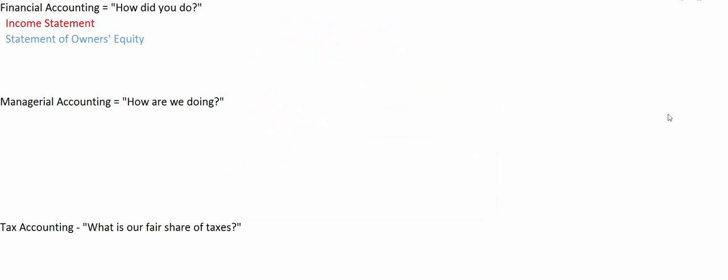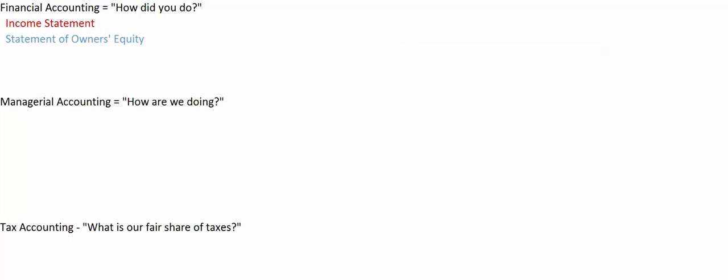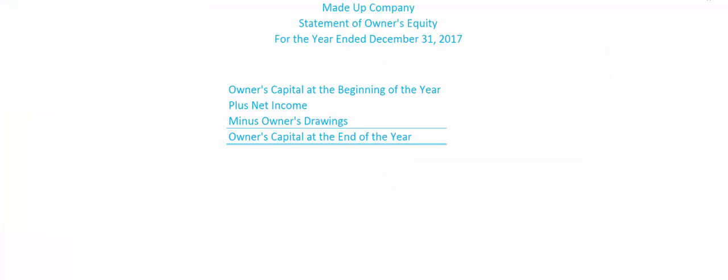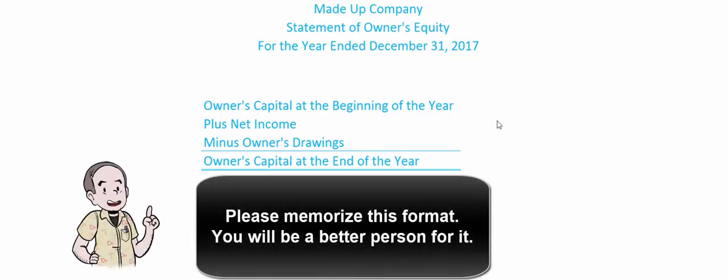The second financial statement is the statement of owner's equity. As we make money, our equity in the business should go up; as we take money out, it should go down. This made-up company shows owner's capital at the beginning, plus net income, minus drawings — the money taken out — giving owner's capital at the end of the year. It's a good idea to memorize this: owner's capital at the beginning plus net income minus owner's drawings equals owner's capital at the end. It comes up over and over again.